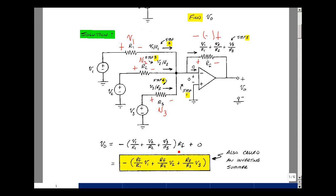So multiplying through by R sub f, I get R sub f over R1 times V1, R sub f over R2 times V2, RF over R3 times V3. So we've got a summation here, and then a change in sign. So we call this an inverting summer, besides being a microphone mixer.